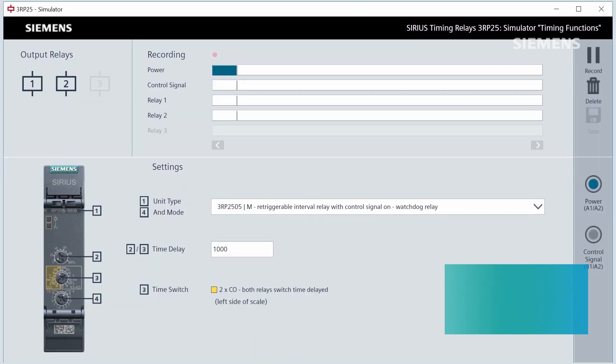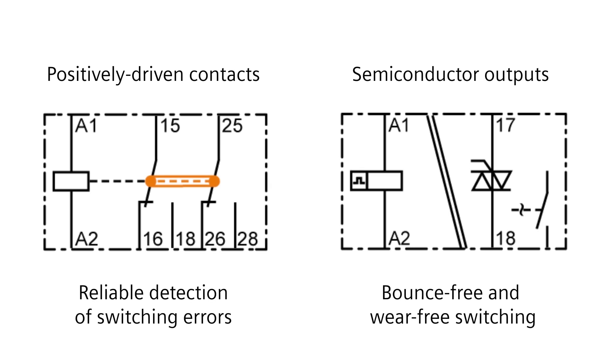The three RP25 versions have a watchdog function. The version with positively driven contacts or semiconductor outputs enables bounce-free and wear-free switching, for example.